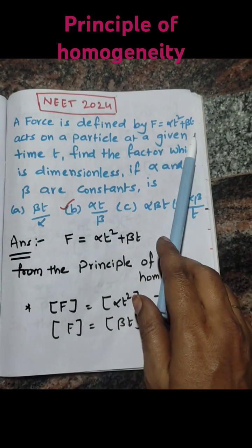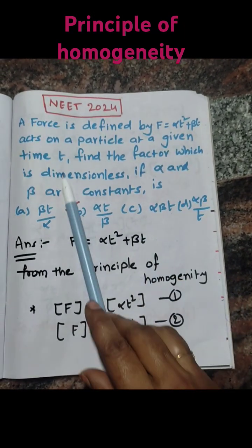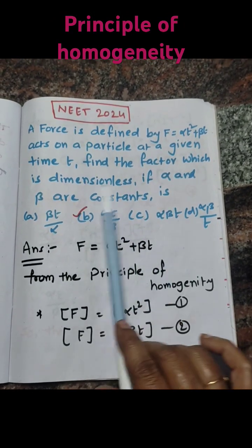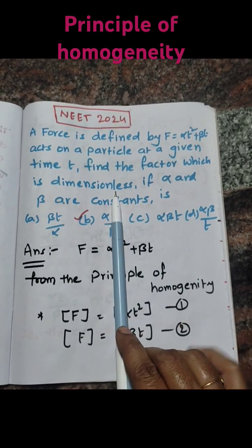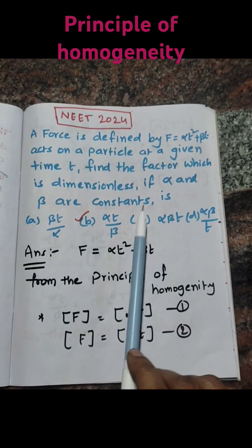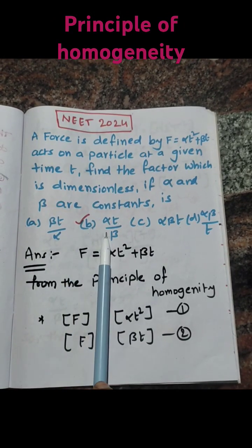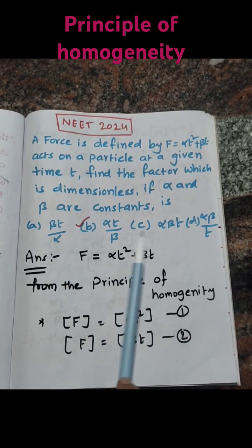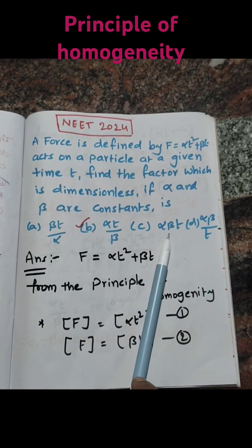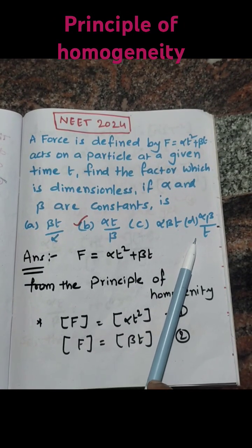A force is defined by F equal to alpha t squared plus beta t, acting on a particle at a given time t. Find the factor which is dimensionless if alpha and beta are constants. Option A: beta t by alpha, Option B: alpha t by beta, Option C: alpha beta t, Option D: alpha beta divided by t.